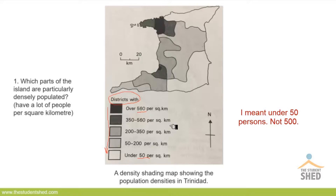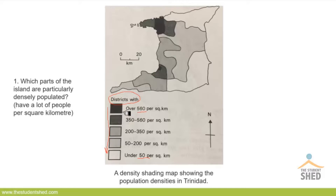To answer the first question — which parts of the island are particularly densely populated — we look at the legend and see that the darker shading, which represents over 560 persons per square kilometer, is found in this northern region of Trinidad. There is also a small pocket in the corner that is densely populated.